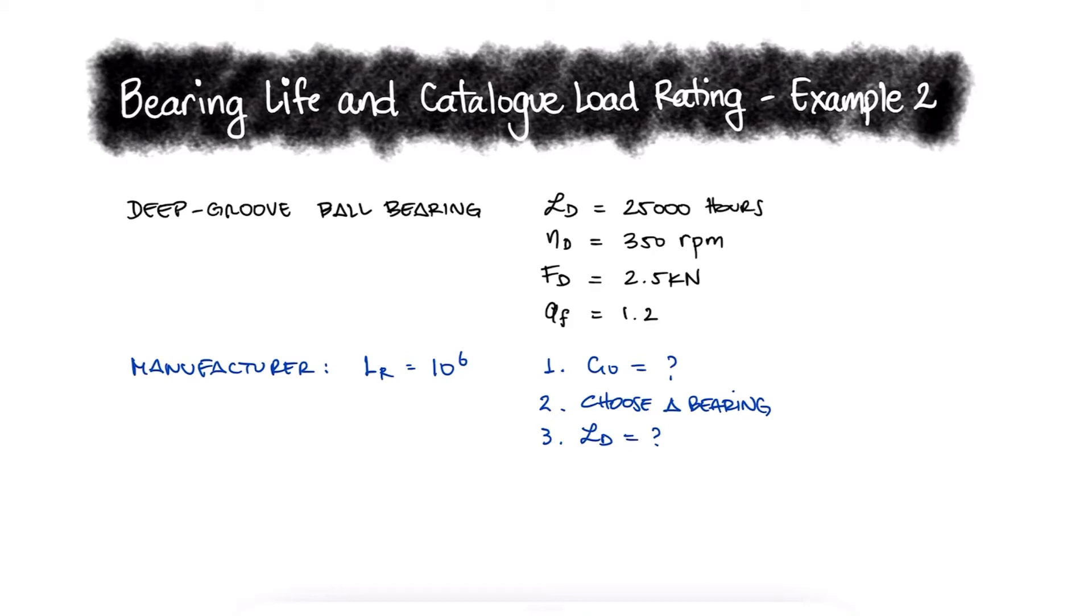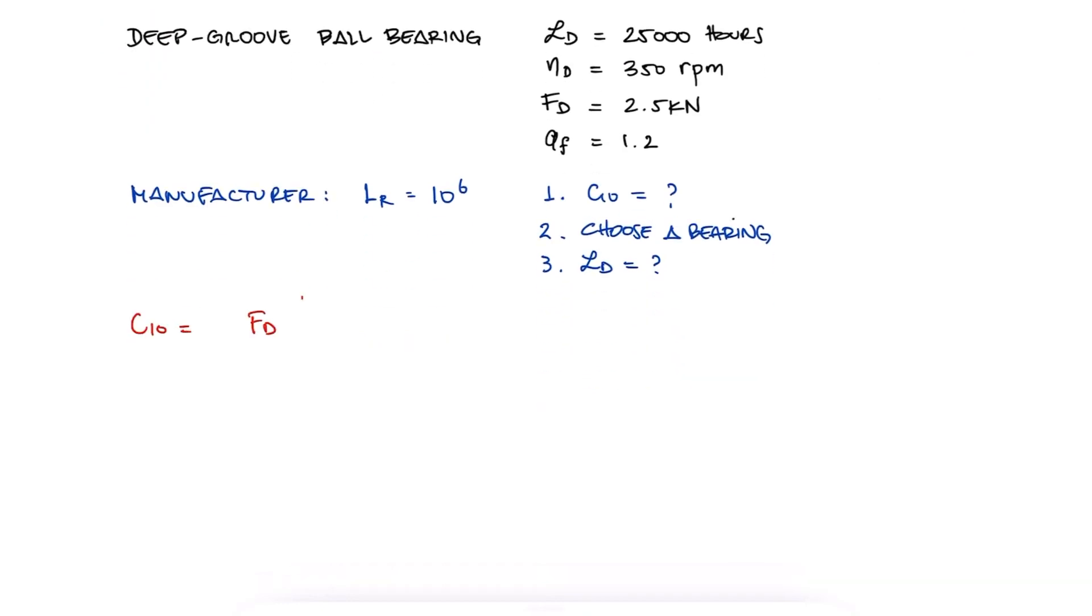The process to find C10 is very similar to the one we used during example 1. The two differences here are that we're being given an application factor AF,